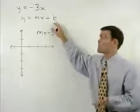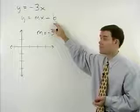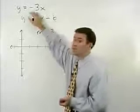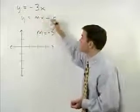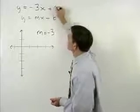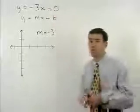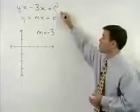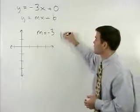But what is our y-intercept, or b? Well, y equals negative 3x can be thought of as y equals negative 3x plus 0. So you can see that our b, or y-intercept, equals 0.